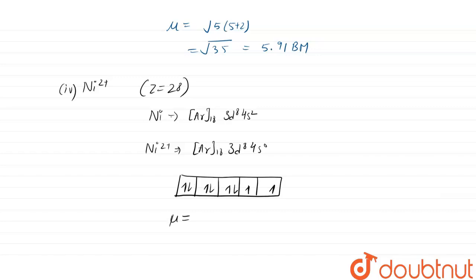The magnetic moment, μ equals square root of 2 into 2 plus 2. 2 plus 2 is equal to 4, and 2 into 4 is 8, so root 8 is equal to 2.82 BM.